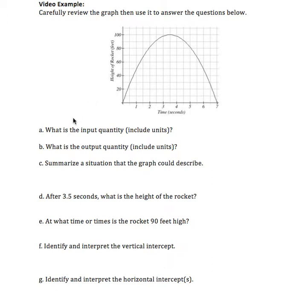Part A asks what is the input quantity, including units. The input quantity and the values represented by the horizontal axis are the same, so that would be time in seconds. The output quantity is the height of the rocket, the vertical quantity: height of rocket in feet.